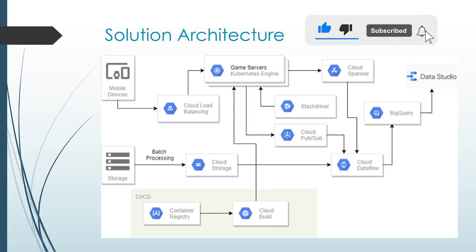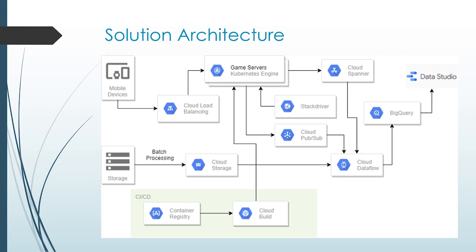For batch processing, data can be stored in Cloud Storage, then forwarded to Cloud Dataflow and on to BigQuery. For the CI/CD pipeline, we can use Cloud Source Repositories or GitHub, build container images stored on Container Registry, build images using Cloud Build, and deploy them to Kubernetes Engine — which is much more convenient for all developers and operators.